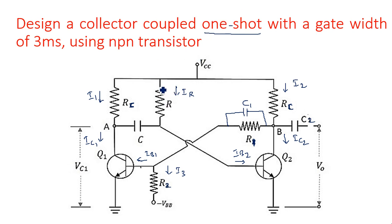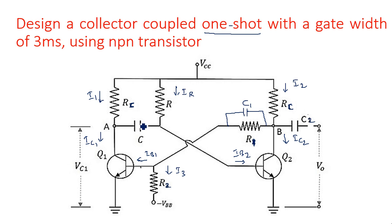This is the circuit diagram of a collector-coupled monostable multivibrator with cross-coupling from collector to base through a capacitor on one side, and a capacitor and resistor on the other side, to make one stable state and one quasi-stable state. One stable state is due to the capacitance in the coupling between collector and base; if the capacitor alone is absent, it becomes a quasi-stable state.